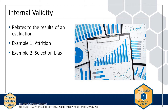There are many threats to internal validity in program evaluation, but two of the most common threats are attrition and selection bias. Let's review these two common threats to internal validity.